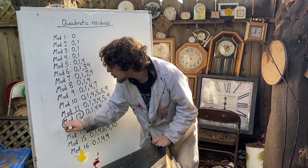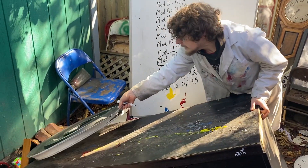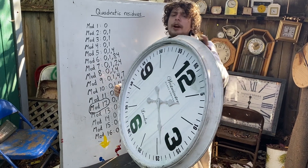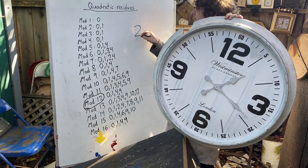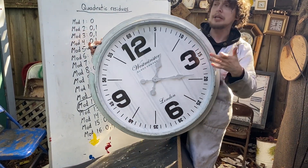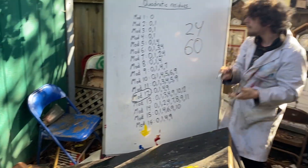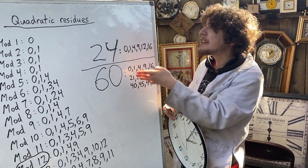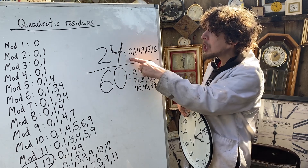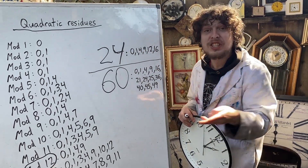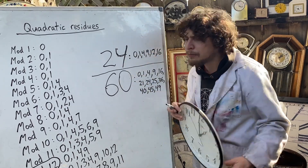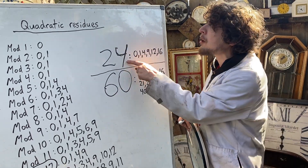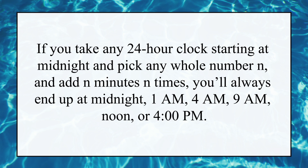We spent some focus on mod 12 because that relates to clocks, but what other numbers appear on clocks? We also have 24 — the total amount of hours in a day — and we also have 60, for how many seconds are in a minute and minutes are in an hour. Now, 24 is actually one of the neater mods in terms of quadratic residues — it just has 0, 1, 4, 9, 12, and 16. Meaning if you played a similar game to what we did with the 12-hour clock, but on a 24-hour clock starting at midnight, you'd always end up at one of those times.